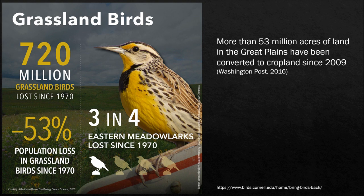Between 2009 and 2016, more than 53 million acres of land in the Great Plains has been converted to cropland. Now, 53 million acres is huge. Just to compare, the state of Pennsylvania is about 29 million acres, so think almost two Pennsylvanias of natural habitat have been lost within only seven years. This creates a huge problem for wildlife when they're trying to survive.